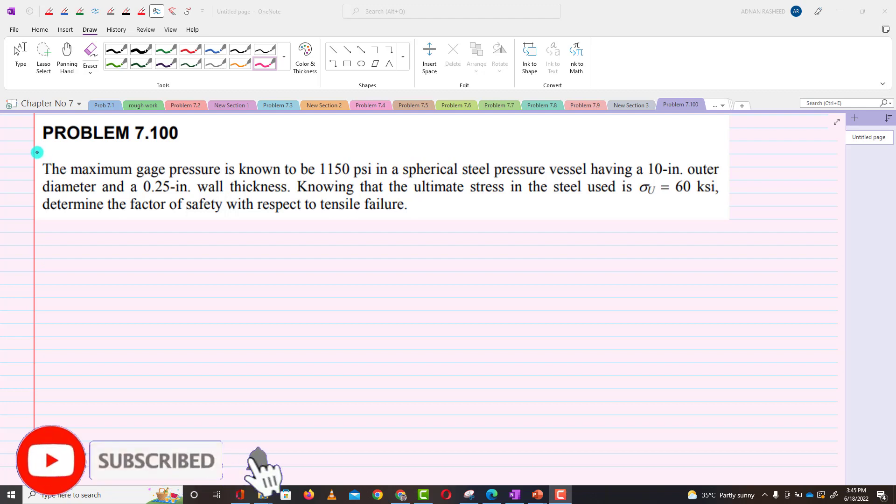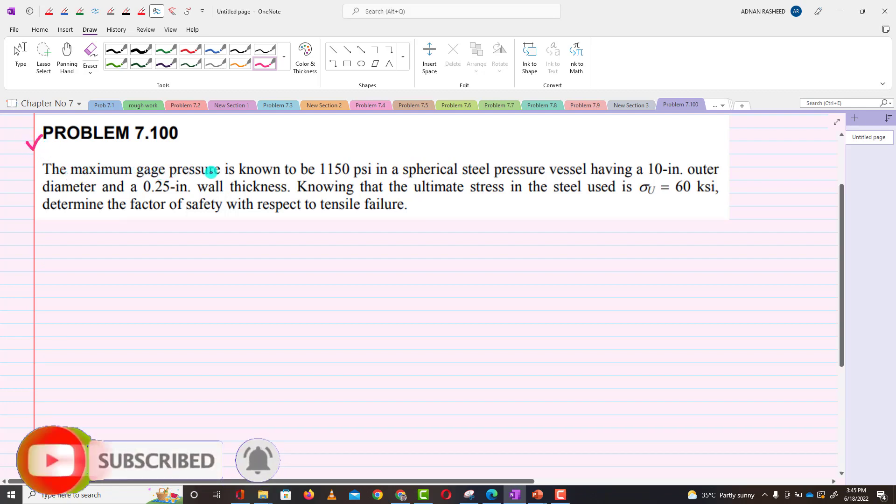Welcome back. Problem 7.100. The statement is: the maximum gauge pressure is known to be 1150 psi in a spherical steel pressure vessel having 10-inch outer diameter and 0.25-inch wall thickness.